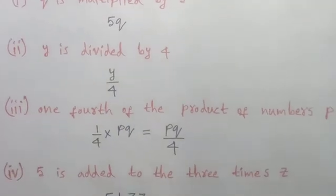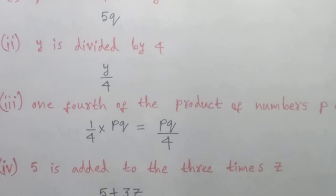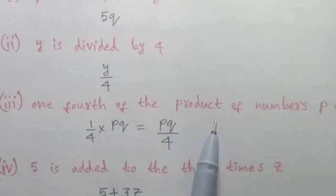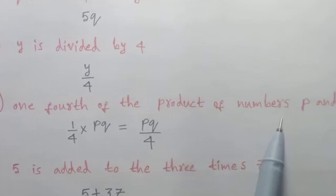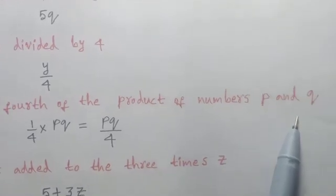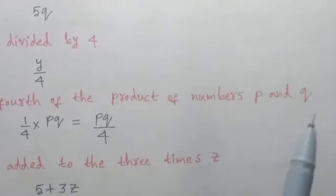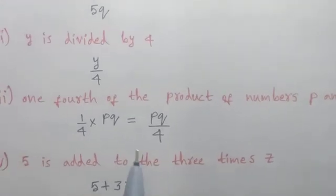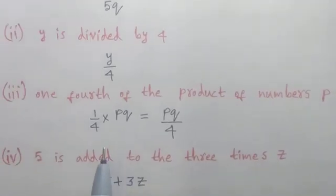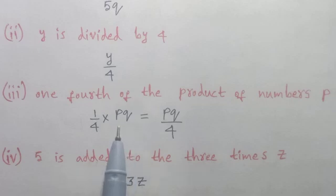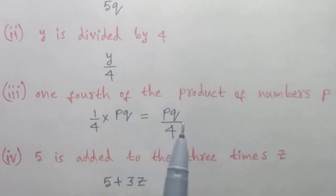Third sentence: one-fourth of the product of numbers P and Q. The answer is P into Q divided by 4, that is PQ by 4.